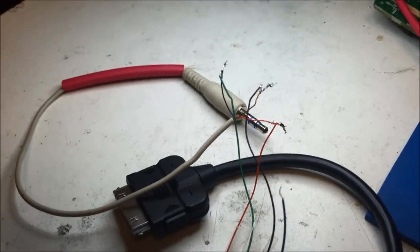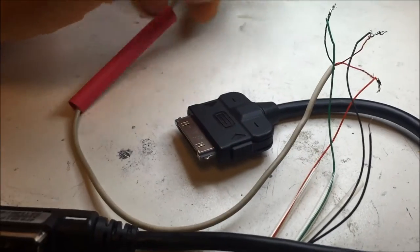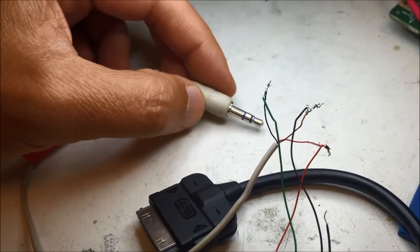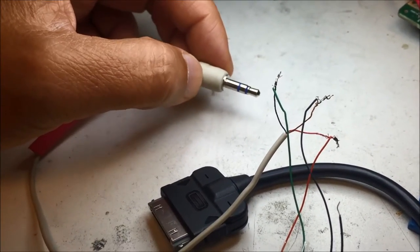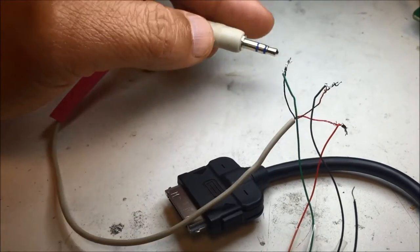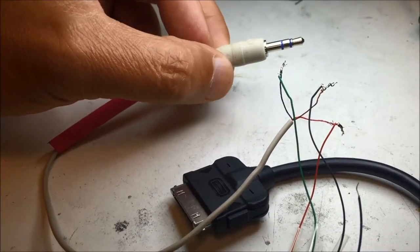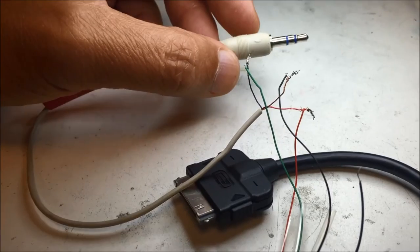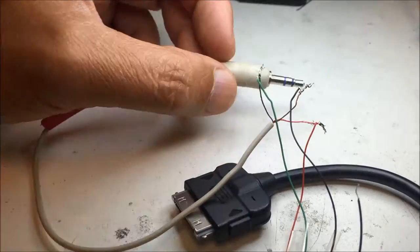So what we need to do is to connect the audio out auxiliary to this cable. This connector here, this is cut out from stereo headphones.